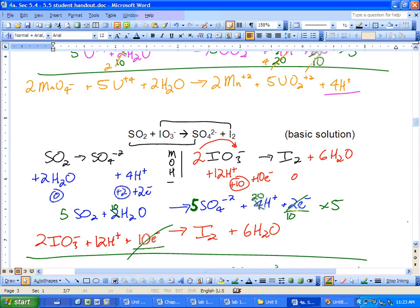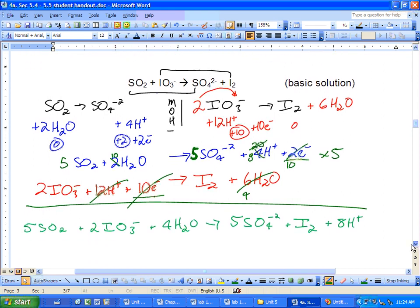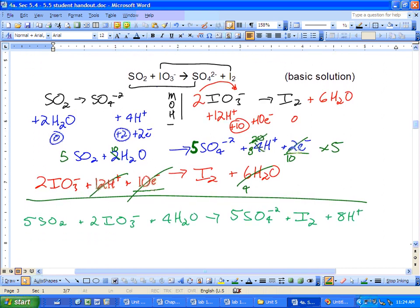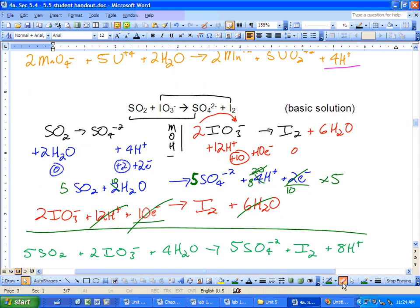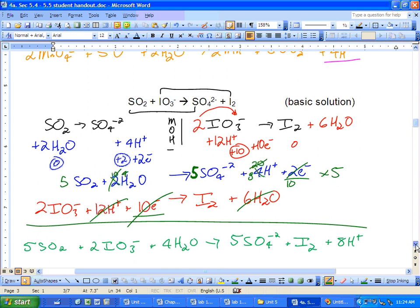We can combine and cancel off. 10 waters and 6 waters, that can go down to 4. 12 H's and 20 H's, those are gone, this goes to 8. So when we combine all that, this is what we get. 5 SO2's and 2 of those. Oh, I messed that up. The 4 doesn't go there. Oh boy. The 4 does not go there. The 4 goes here. 4 waters. Then 5 SO4's and the I's. And notice now how we're ending with 8 H+.